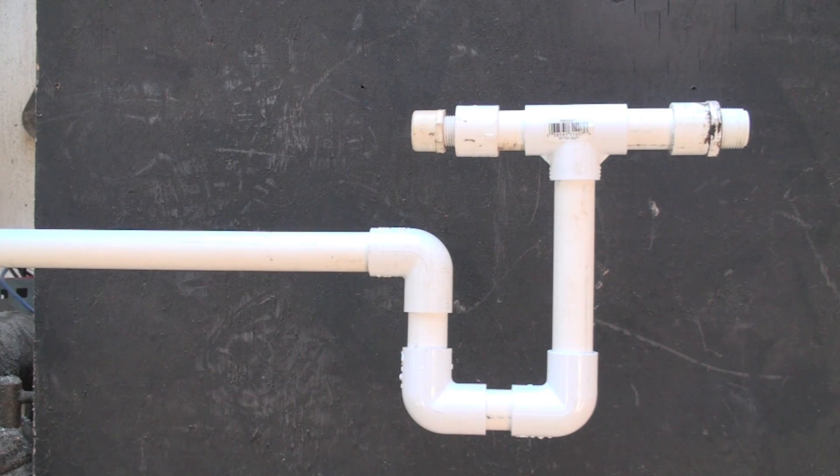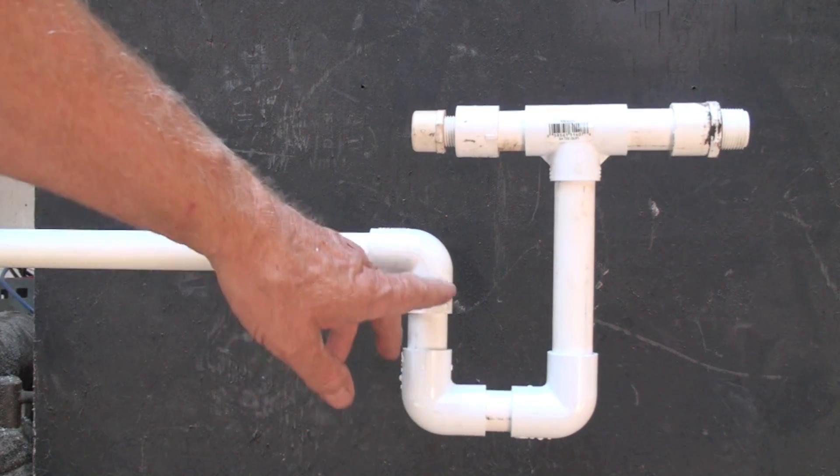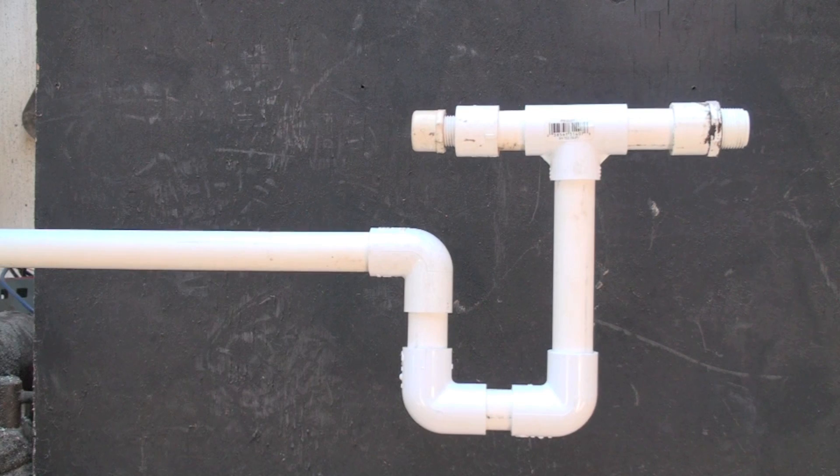That's a P-trap on the air conditioner evaporator. Pretty simple. I want at least two inches of water in this trap. And you can see there I've got more, but that's fine.